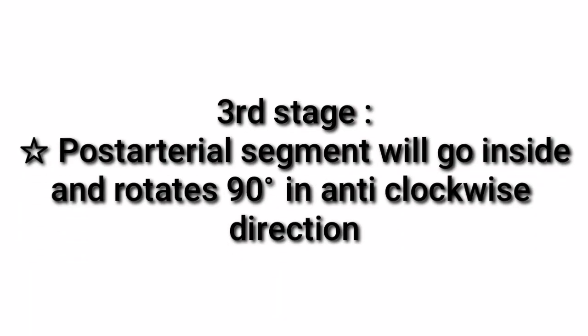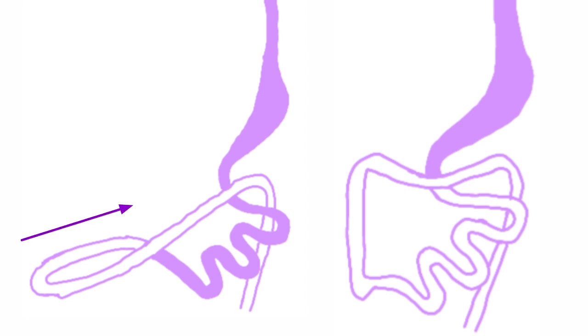In the third stage of rotation, the post-arterial segment will now go inside the embryo and it also rotates 90 degrees in the anti-clockwise direction. Observe these two diagrams. Previously the post-arterial segment was outside but the pre-arterial segment was inside. Now what happens is the post-arterial segment will also go inside the embryo. This post-arterial segment undergoes 90-degree rotation in the anti-clockwise direction as well as it moves inside the embryo.